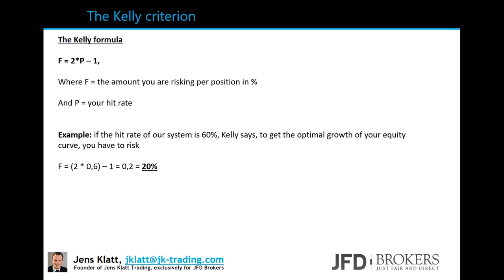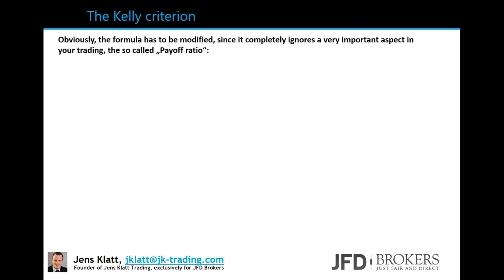You can play around with it: if the hit rate is 40%, you multiply 0.4 by 2, getting 0.8, minus 1 gives −0.2, or minus 20%. You can't risk minus 20% of your trading capital. This means Kelly in its raw form can only be used when the hit rate is bigger than 50%. My personal trading approach often has a hit rate below that — between 40% and 45% — so I can't use the raw Kelly formula. That's why I have to adapt it.